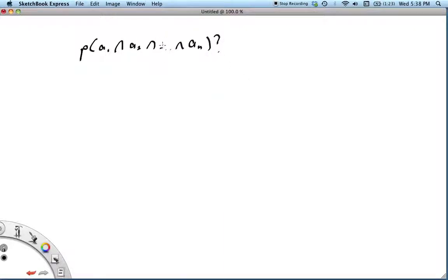Well, we use exactly the same sort of reasoning. We're going to call this one event. So we could say that this is equal to the probability, then, of A1 given A2 intersect dot dot dot intersect An times the probability of A2 intersect dot dot dot intersect An.